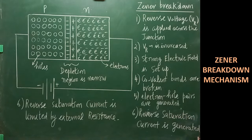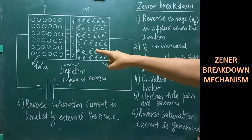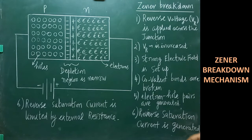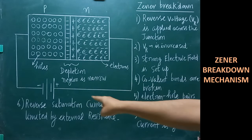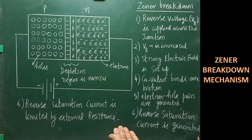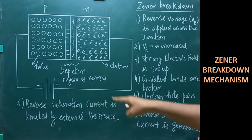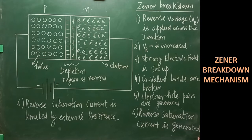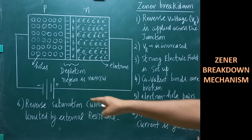At a particular reverse voltage across the diode, the current passing through the junction will be tremendous — the reverse saturation current increases abruptly. That can be limited by connecting one external resistance. In the circuit you can observe one resistance called external resistance, which prevents the flow of the reverse saturation current and avoids damage to the Zener diode.